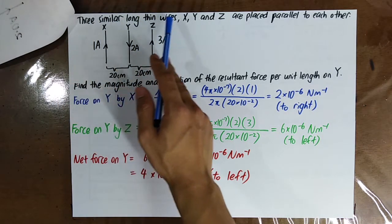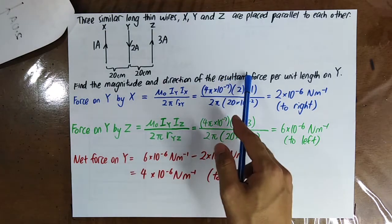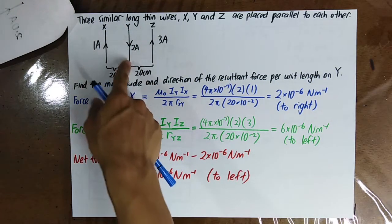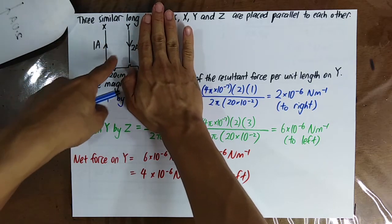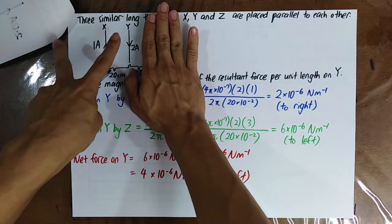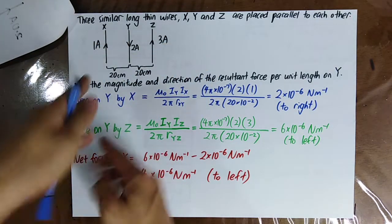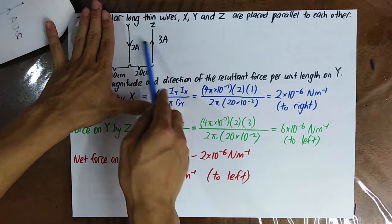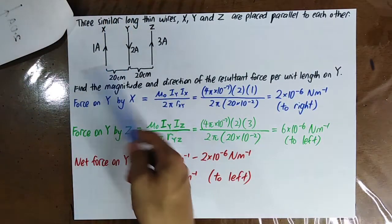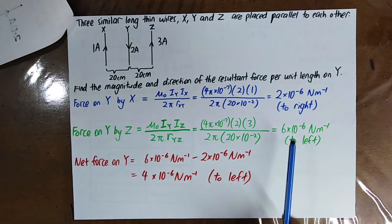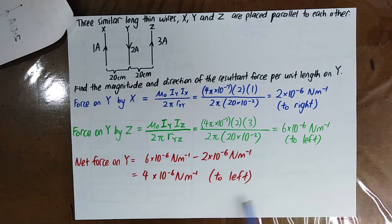Three similar long thin wires X, Y, Z are placed parallel — find the magnitude and direction of the resultant force per unit length on Y. Studying X and Y: currents are in opposite directions, so they repel — force on Y by X is to the right. Studying Y and Z: currents are also in opposite directions, so they repel — force on Y by Z is to the left. Calculate each force per unit length, then cancel them since the directions are opposite.